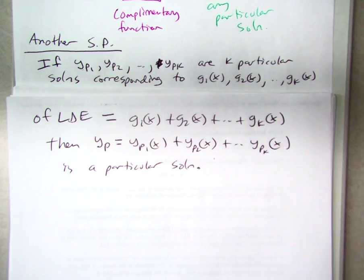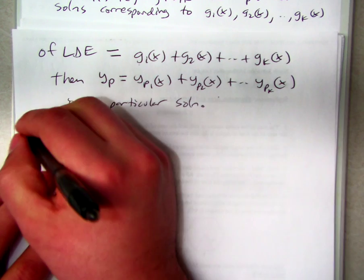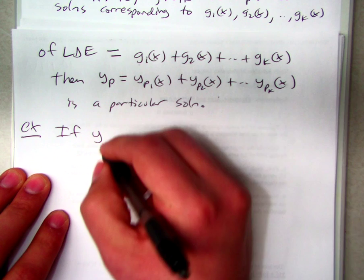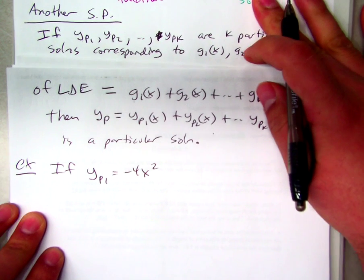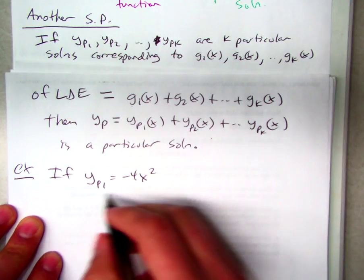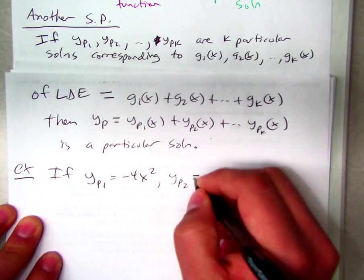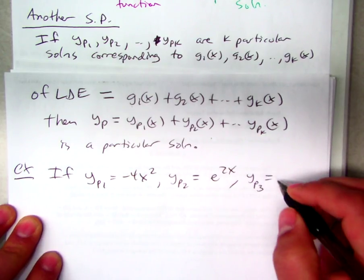I think with a quick example we can clear this up. Let's say that we have YP1 equal to negative 4X squared. YP2 equal to E to the 2X. YP3 equal to XE to the X.